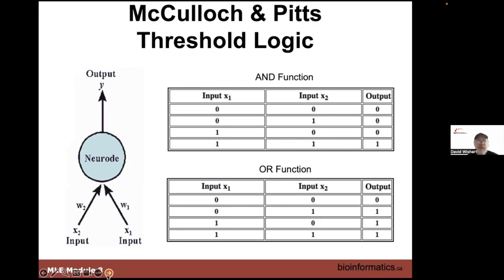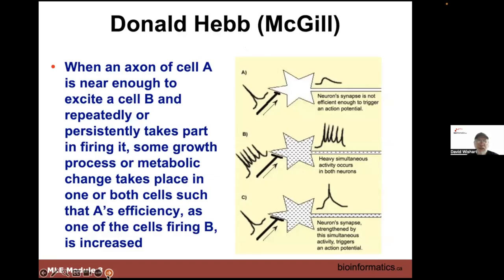They imagined you could have multiple inputs, like a neuron, and a single output, with different weights — some strong inputs, some weak. The weight is w1, the output is y, and input is x. You can do AND: 0 and 0 is 0, 0 and 1 is 0, 1 and 0 is 0, 1 and 1 is an output of 1. You can do OR: 0 or 0 is 0, 0 or 1 is 1, 1 or 0 is 1, 1 or 1 is 1. That's Boolean logic — this is what they wanted it to be able to do.